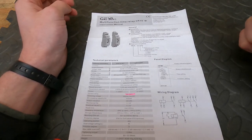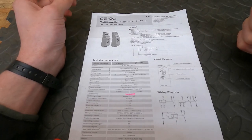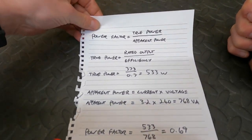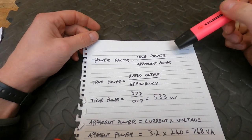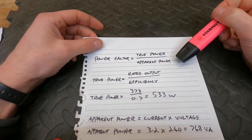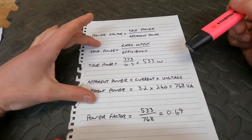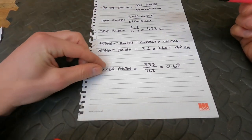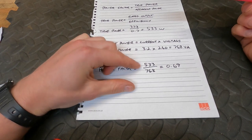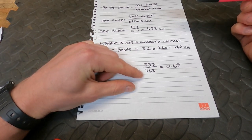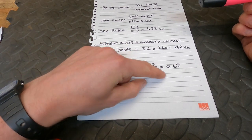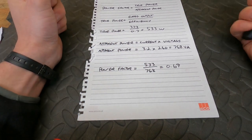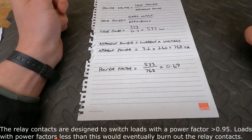We don't know what the power factor of the motor is because it's not on the nameplate, but we can work it out. The power factor is equal to the true power divided by the apparent power. This is all the working, which you can look at if you're interested. For this motor, the power factor is equal to 533 watts divided by 768 VA, which gives us a value of 0.69—well below the 0.95 value implied by the AC1 spec.